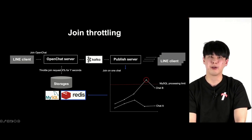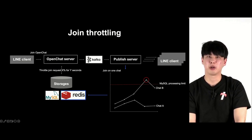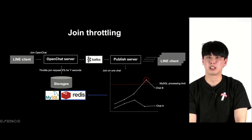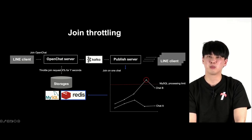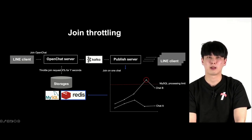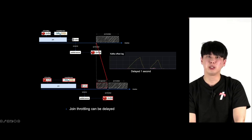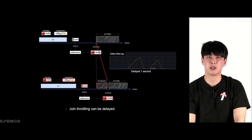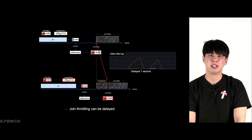Similar to hot chat throttling, every time an open chat join request is completed, it is sent to Kafka as an event. In the publish server, they record how many requests are in the bucket. If it exceeds MySQL capacity, a pop-up message says please make the request later. We are in the process of resolving the bottleneck. Instead of disabling MySQL, we thought it would be better to reduce the impact on other chats through hot chat throttling.